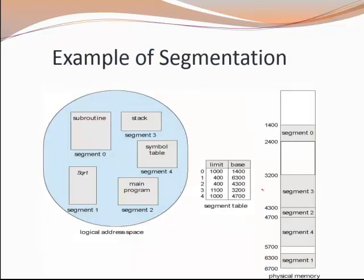This is a full example of segmentation with a logical address space, physical address space, and a segment table. The segment table is updated when a process is transferred from secondary storage to primary storage, so that the CPU can use it to map logical addresses to physical addresses. Taking the main program — segment number 2 — the segment table shows limit 400 and base address 4003. So segment number 2 maps from 4003; adding 400 gives last address 4700. This is the entire segment number 2, and in this way all segments are mapped.